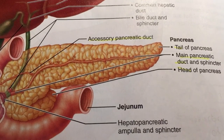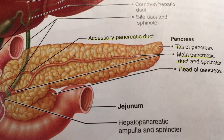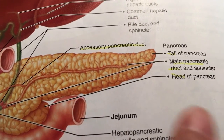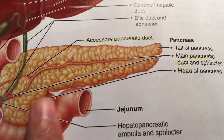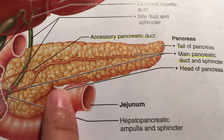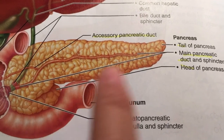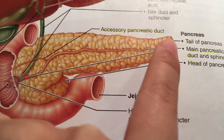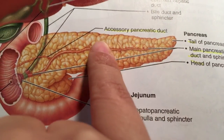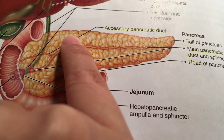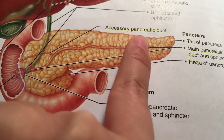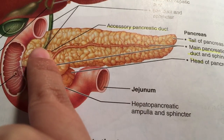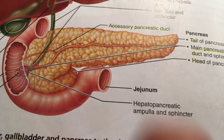There are four structures of the pancreas: the head of the pancreas, the tail of the pancreas, the main pancreatic duct, and a little accessory pancreatic duct.